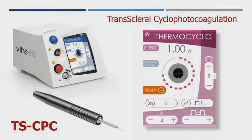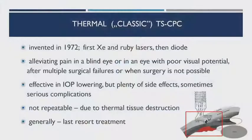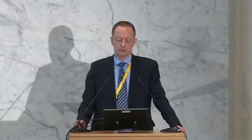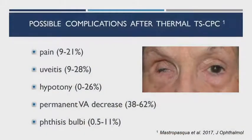You are all familiar with the old traditional method called TCPC — Transcleral Cyclophotocoagulation. It's a thermal method with destruction of tissue, invented in the early 70s. First performed with xenon and ruby lasers, then diode. It is still used and effective in relieving pain in a blind eye or an eye with poor vision or after surgical failures. However, it is burdened by plenty of side effects and cannot be repeated because it is thermal destruction of tissue. Generally, it is a last-resort treatment. Side effects include pain and uveitis — very common — hypotony, permanent visual acuity decrease, and sometimes, unfortunately, even loss of the eye.